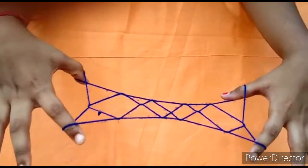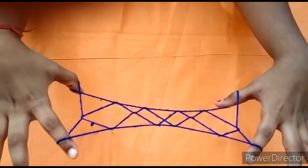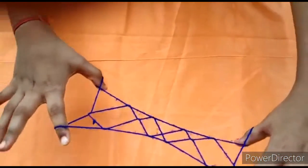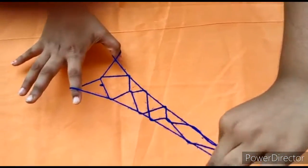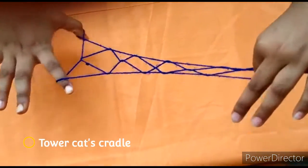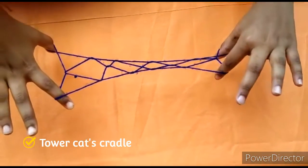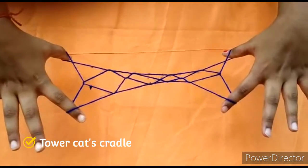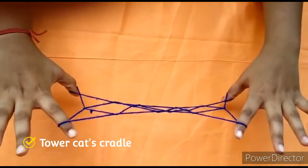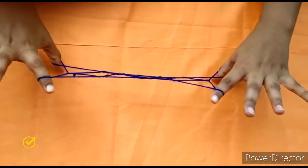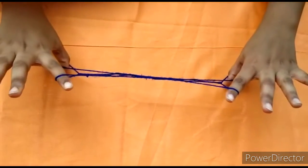Now we can make a tower with Jacob's Ladder. Turn this side and close your string like this - it becomes a tower. Like this, you can open it. Finally, this is our Jacob's Ladder.